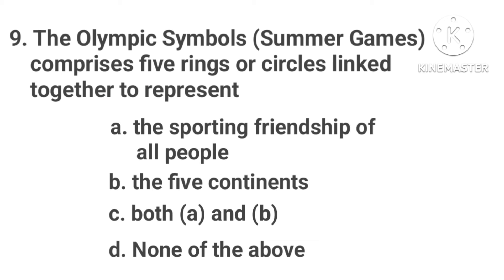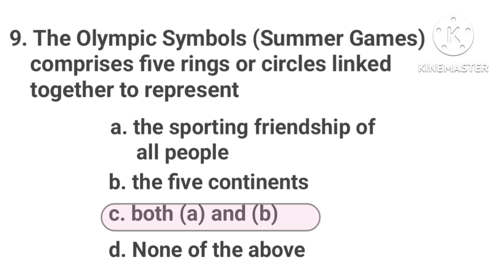The Olympic symbol for the summer games comprises five rings or circles linked together to represent. Option A: The sporting friendship of all people. Option B: The five continents. Option C: Both A and B. Option D: None of the above. The correct answer is Option C.